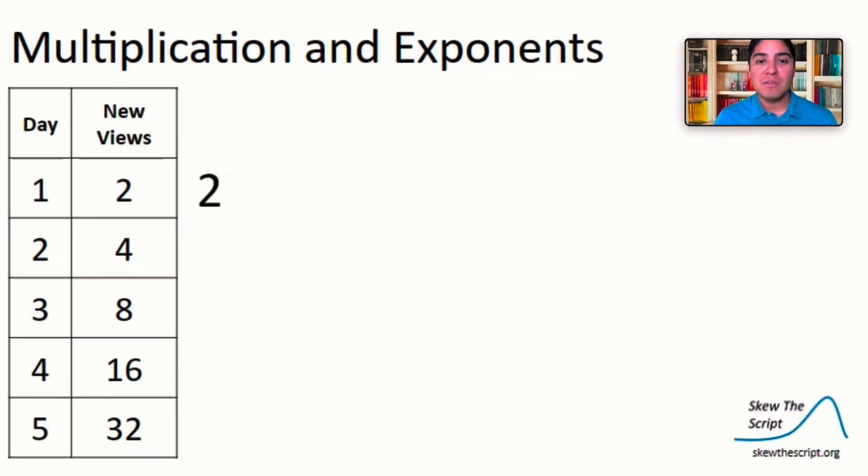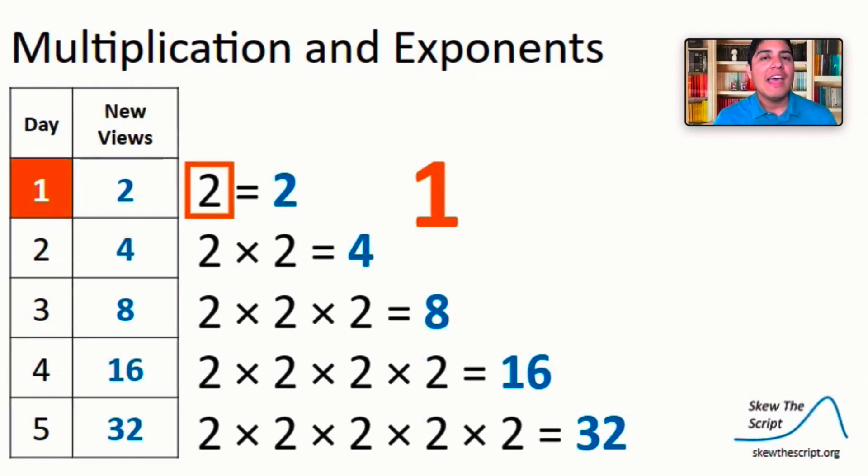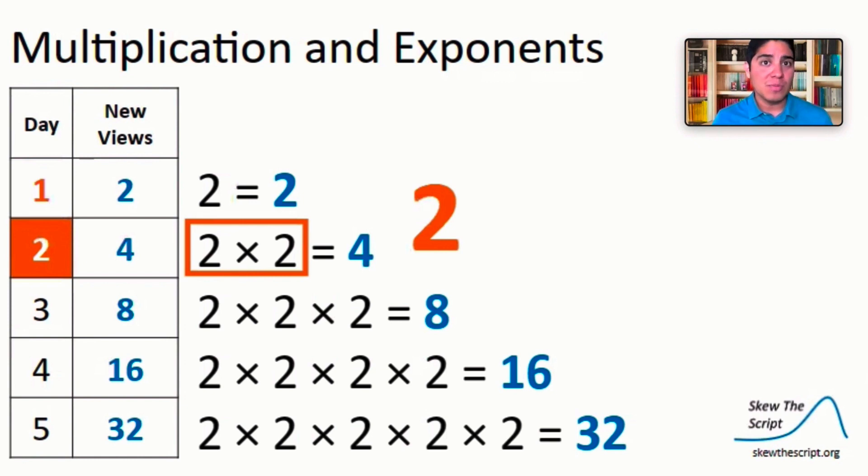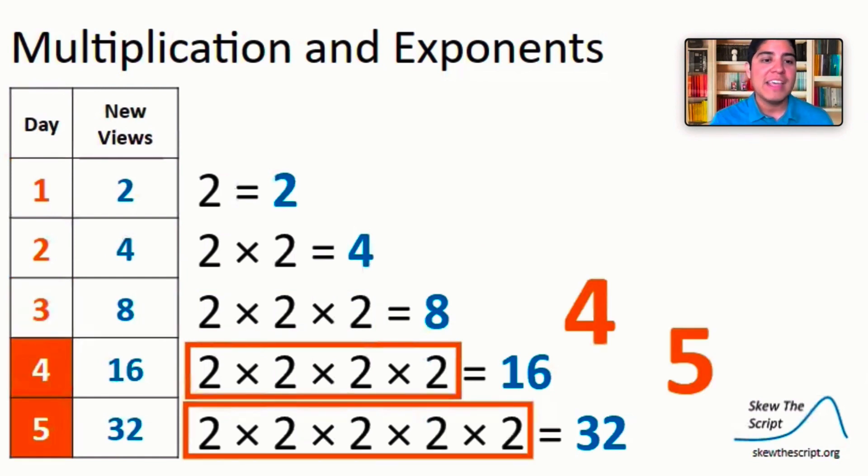So we'll start here with two, and then we'll try rewriting four as two times two. We also see that eight can be rewritten as two times two times two, and we see that this pattern continues with the last two rows. Now let's try this a different way. When x is one, we see that our output is two. When x is two, we see that we multiply two twice. When x is three, we see that we multiply two, well, thrice. Let's continue to evaluate this when x is four and when x is five. The pattern continues.